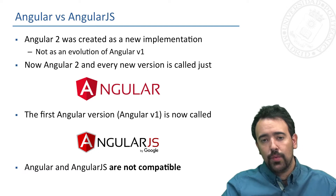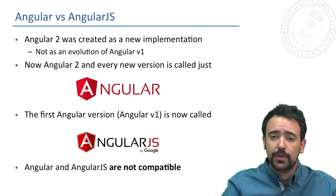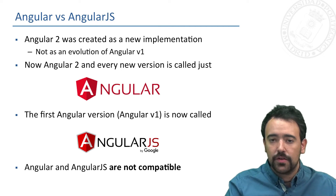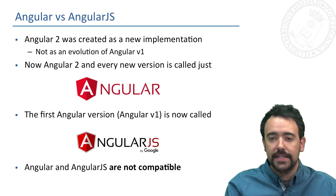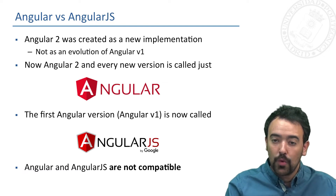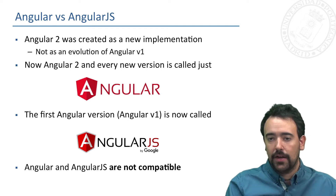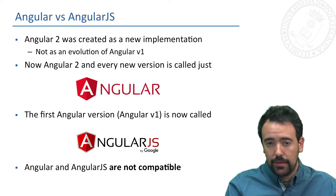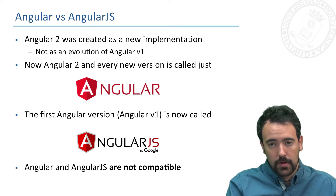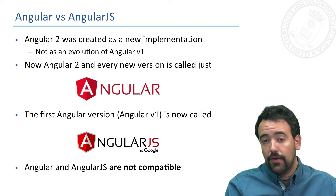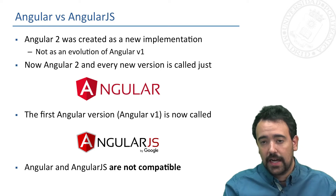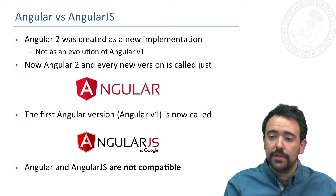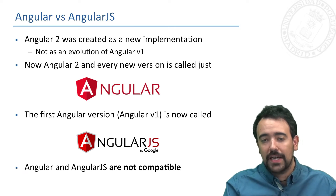A very important thing to take into account is the difference between what is called Angular and AngularJS. When Angular released the second version of this technology, this was not a new release with some improvements — Angular 2 was a total rewrite of the technology. So Angular 2 and Angular 1 versions of this framework were not compatible between them. The terminology used from that moment is that every release after release 2 is now called just Angular, and the first release that is not compatible with the others is now called AngularJS.